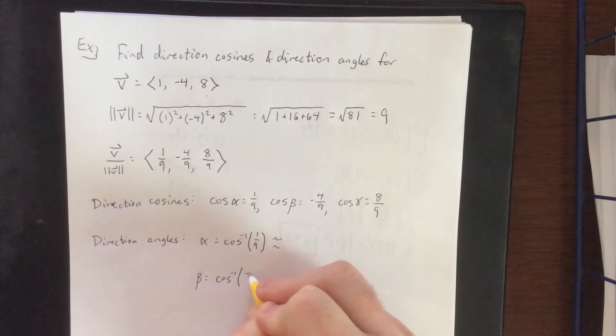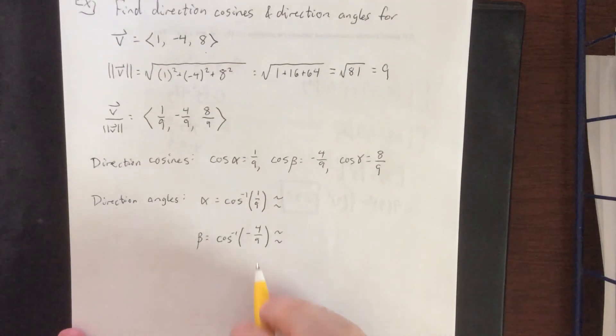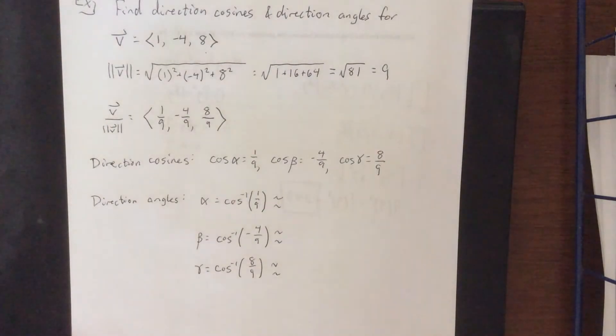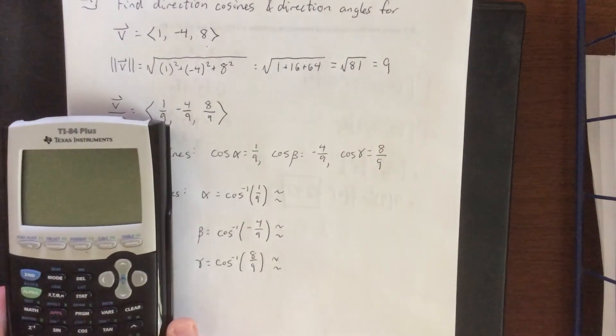Beta will be the arc cosine of -4/9. I know that's going to be an obtuse angle due to the negative fraction. Gamma is the arc cosine of 8/9. All three of these can be obtained from a graphing calculator, and that's exactly what I'm going to do. I'll shift this over to the right a little bit so you can see what I'm inputting.